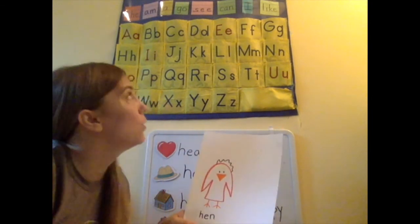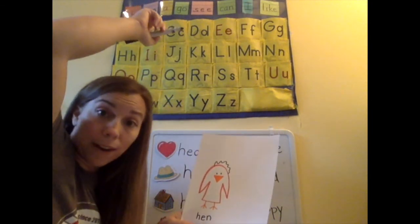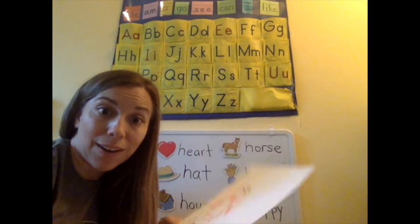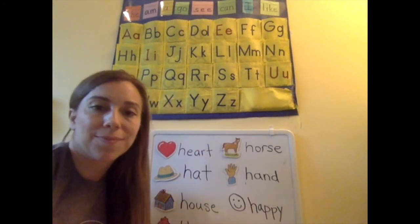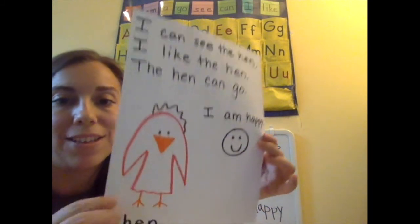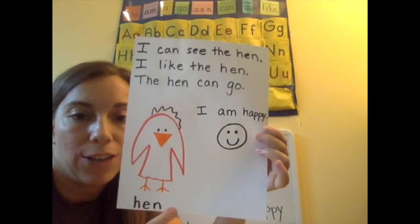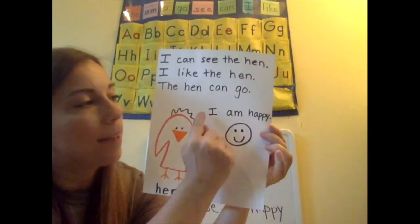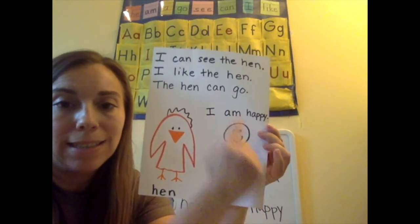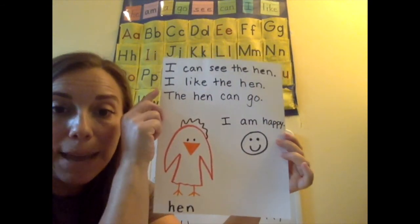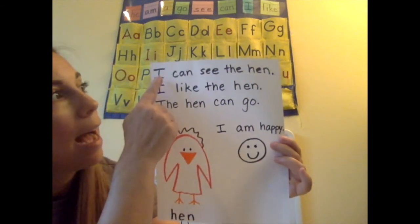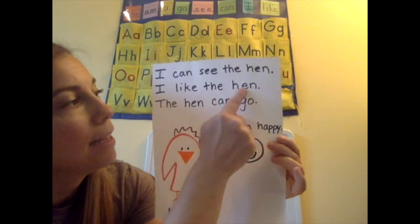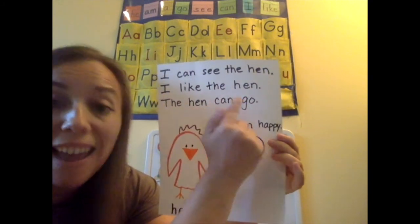Now I can even use some of those words up there that I have learned to make a sentence about my hen. I'm going to do it now. Okay. Here's my picture. I drew the hen and a smiley face. So I wrote I am happy next to this. And look at the sentences I made about my hen. I can see the hen. I like the hen. The hen can go.